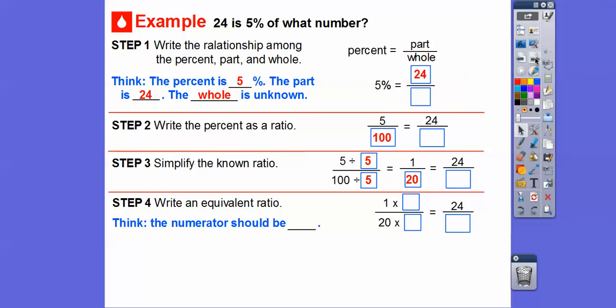Now we want to write an equivalent ratio. This numerator should be 24. So we're going to multiply 1 times 24, which means multiply 20 times 24. So 20 times 24 is the same as 20 times 20, which is 400. 2 times 2 is 4, then add these two zeros.